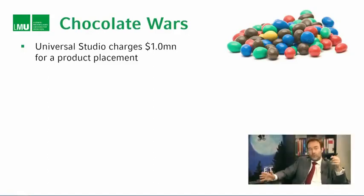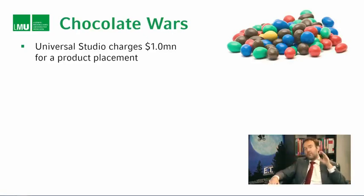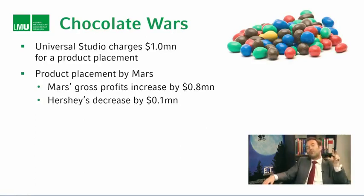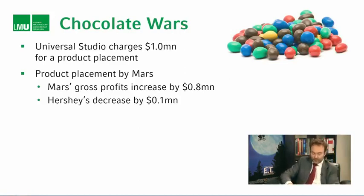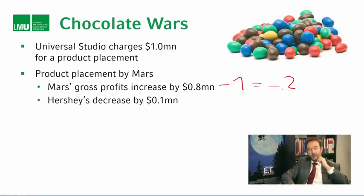Universal Studios, which were shooting E.T. at the time, were approaching Mars saying: do you want to place a product in this scene in E.T.? If you do, we're going to charge you $1 million. If Mars had agreed, Mars' gross profits would have increased by $800,000, but net profits would be minus $200,000 after the $1 million payment. Hershey's, who didn't pay anything, would have suffered a $100,000 loss in sales.